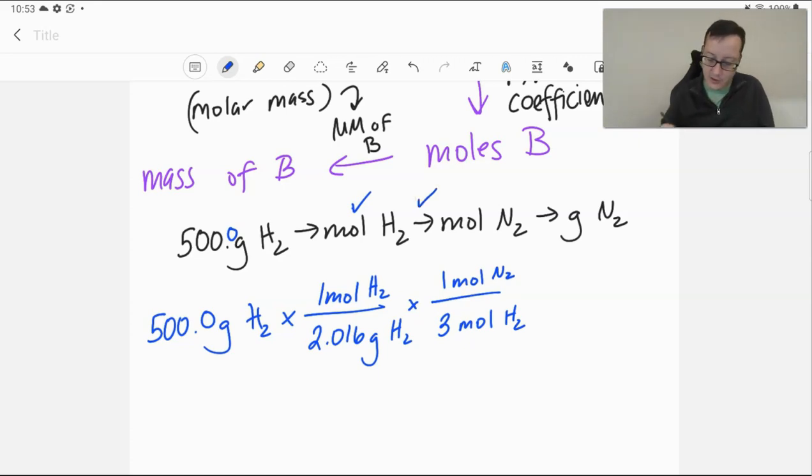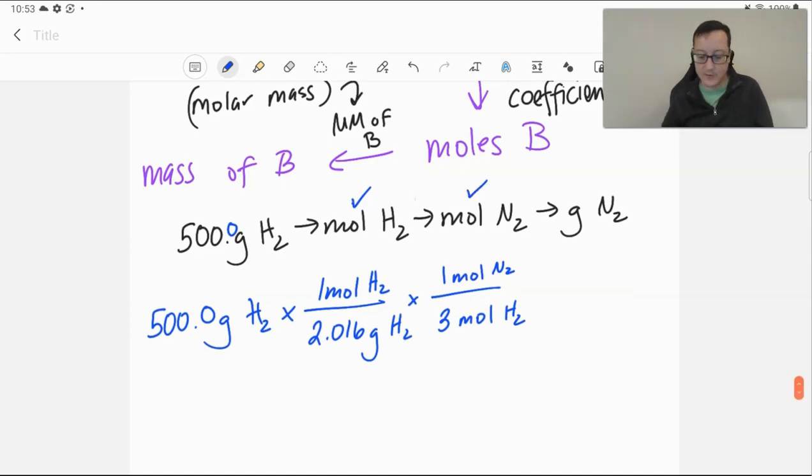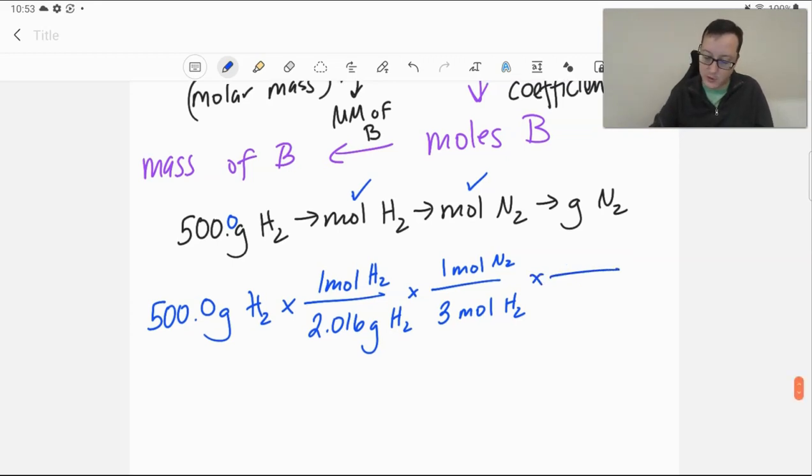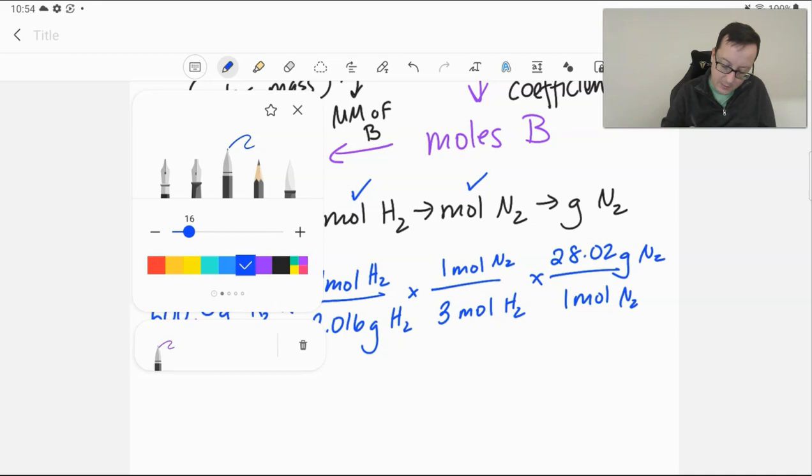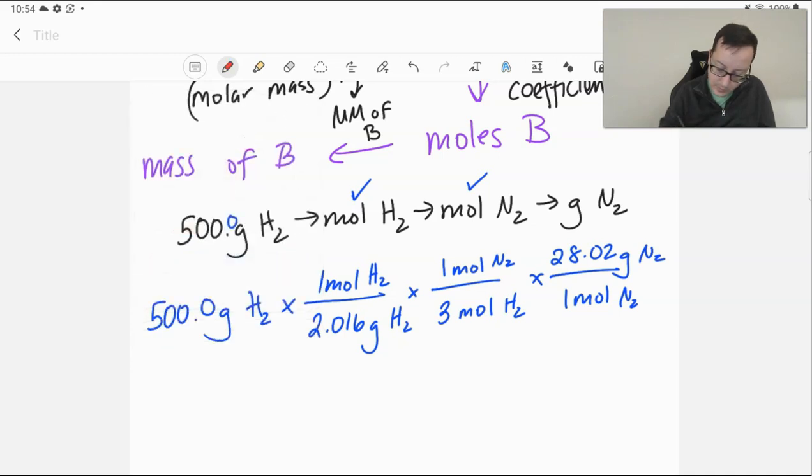So, that's our reaction coefficient. So, we're now at moles of nitrogen. And if we want grams of nitrogen, then we need the molar mass of nitrogen, which is 28.02 grams for one mole of nitrogen. Notice that all of these cancel out. Grams hydrogen cancels. Moles hydrogen cancels. Moles nitrogen cancels. And we're left with grams of nitrogen, which is what the question asked for.